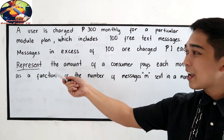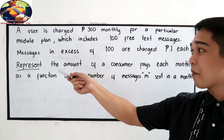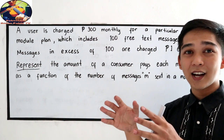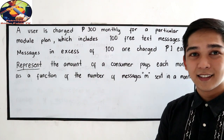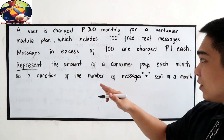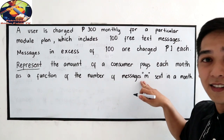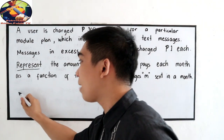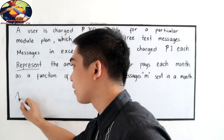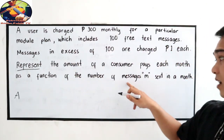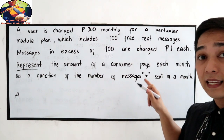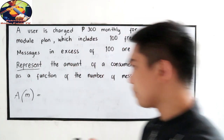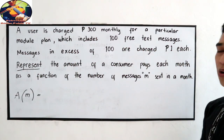Now, what we will do is represent the amount the consumer pays. We will make it into an equation. Let's say the amount be A, and the number of messages be M. So we will now determine the conditions for A as a function of M.